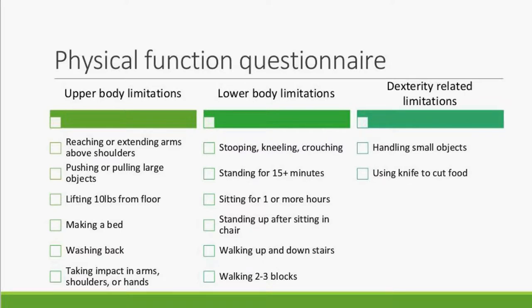In the tracking cohort, we previously conducted a factor analysis to determine underlying domains, using a data-driven approach. Three domains emerged: upper body limitations — including tasks requiring strength such as lifting 10 pounds from the floor, and mobility or range of motion such as washing your back, with six questions total; lower body limitations — including range of motion tasks like stooping, kneeling, and crouching, and strength or endurance tasks like standing up from a chair or walking two to three city blocks; and dexterity-related limitations — with only two questions: handling small objects and using a knife to cut food.